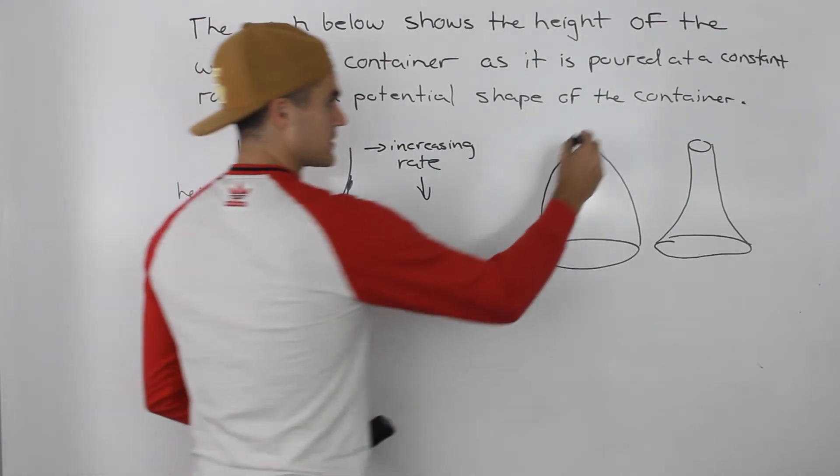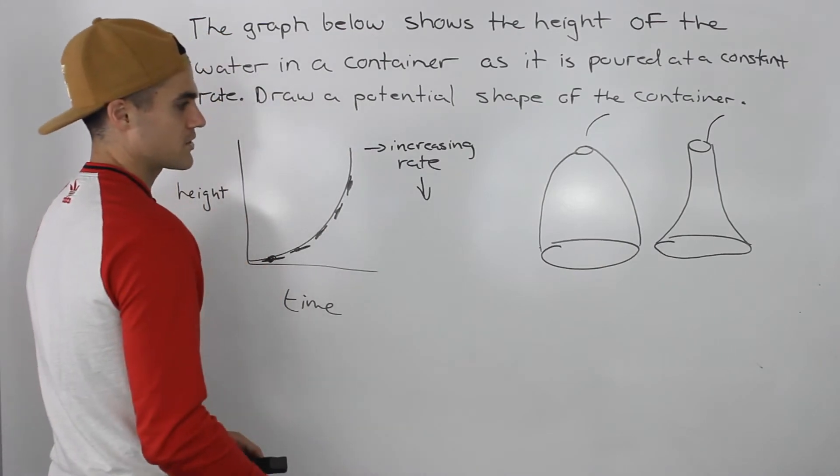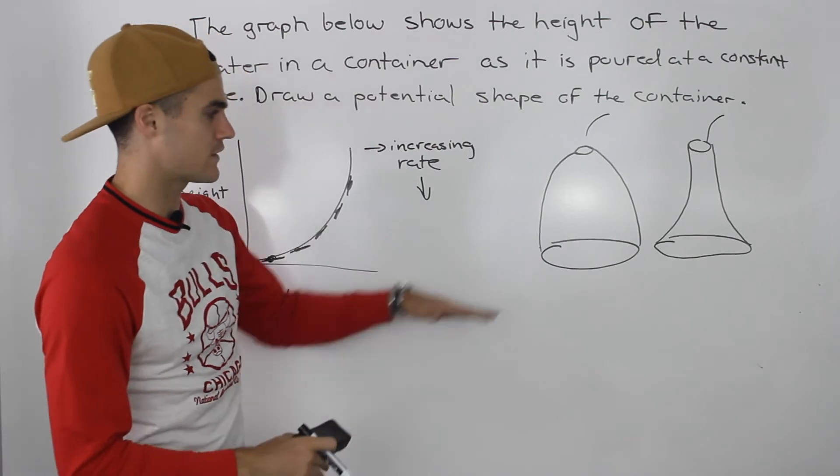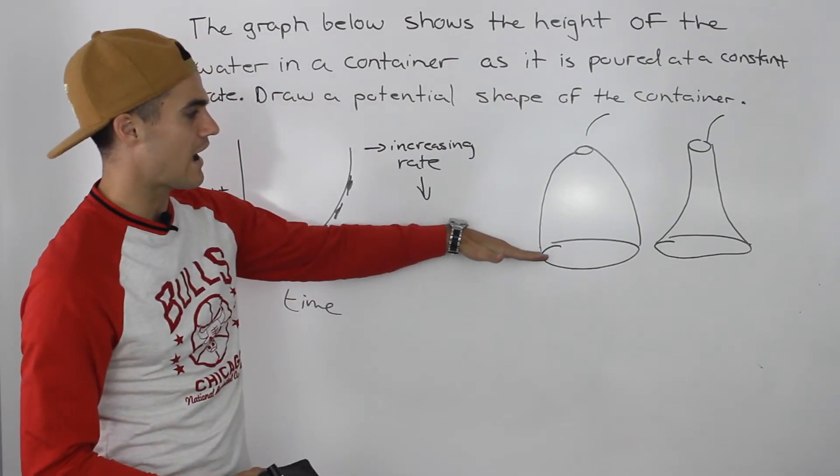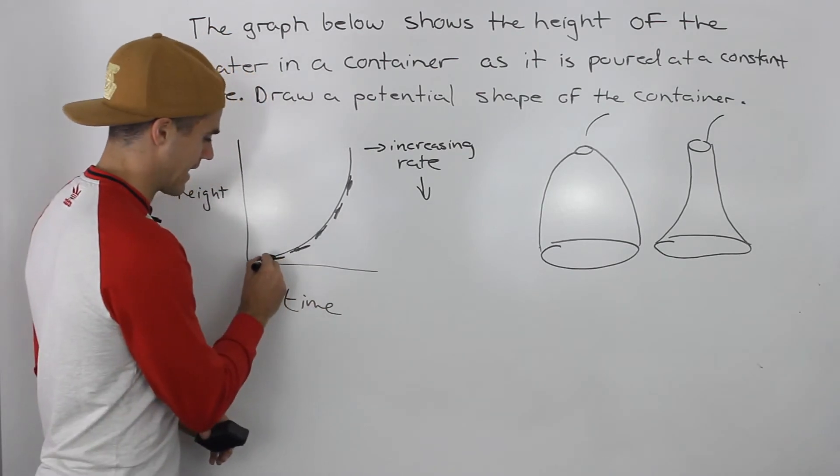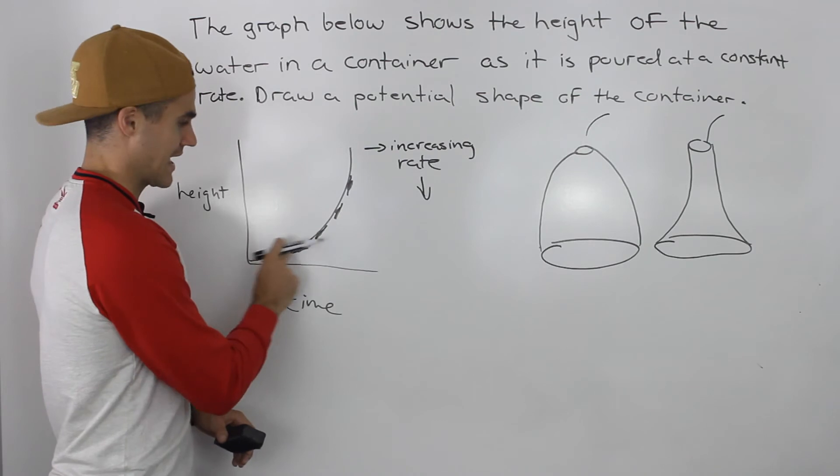And the reason is because if you're pouring water in from the top, what's going to happen is notice with the larger diameter, because there is more container to fill, the height is going to be changing slowly at first, hence why we have these less steep tangents at the beginning.